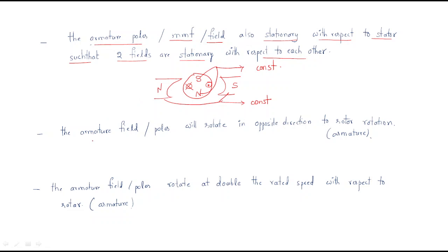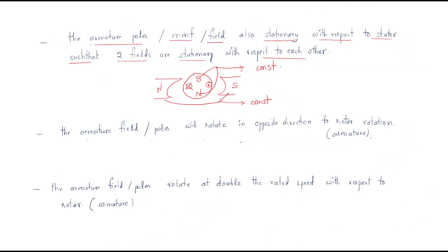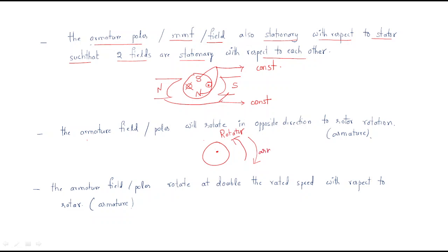The armature field poles rotate in the opposite direction to the rotor rotation — this is a very important point. Generally, if the rotor rotates in the anticlockwise direction, the armature poles will be in the reverse direction. For example, if this rotor rotates in one direction, the armature poles will rotate in the opposite direction, whether it is a generator or a motor.